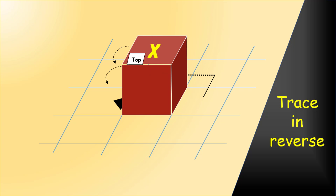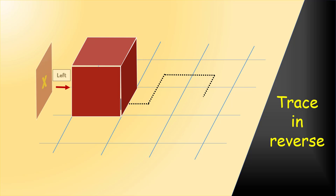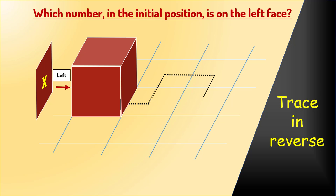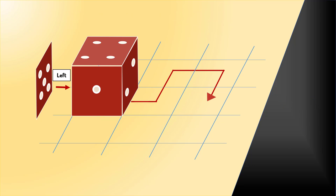And previous to that, x would be on the left face. And we are back to the initial position. So, which number in the initial position is located on the left face? It's the number 5. So, we got the answer to this problem. The number on the top in the final position would be number 5.